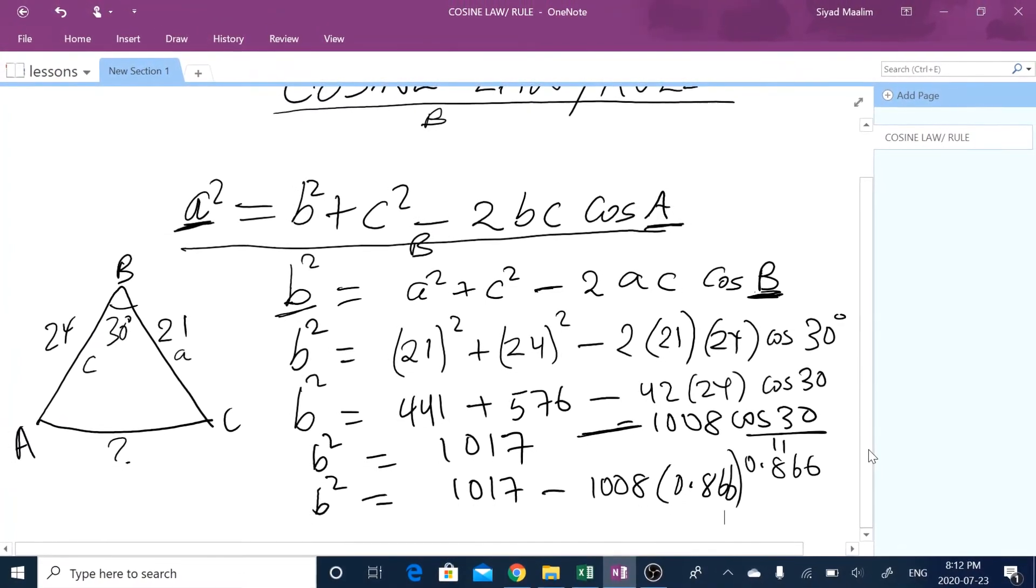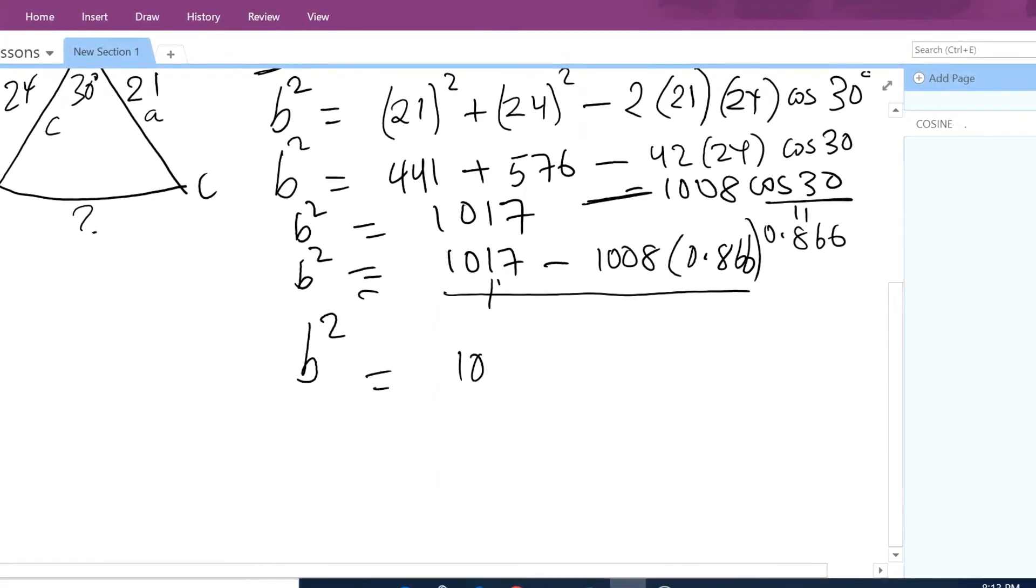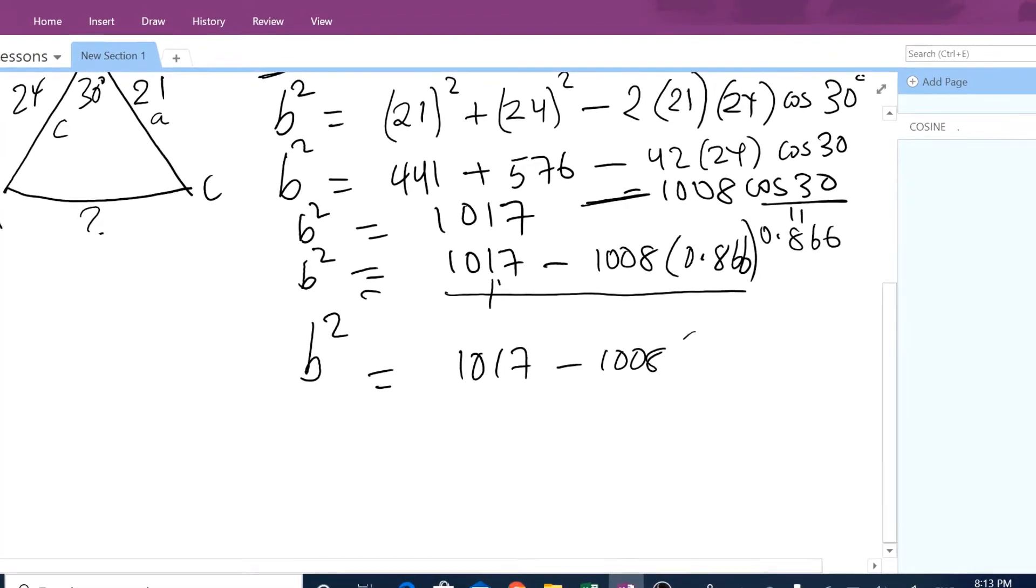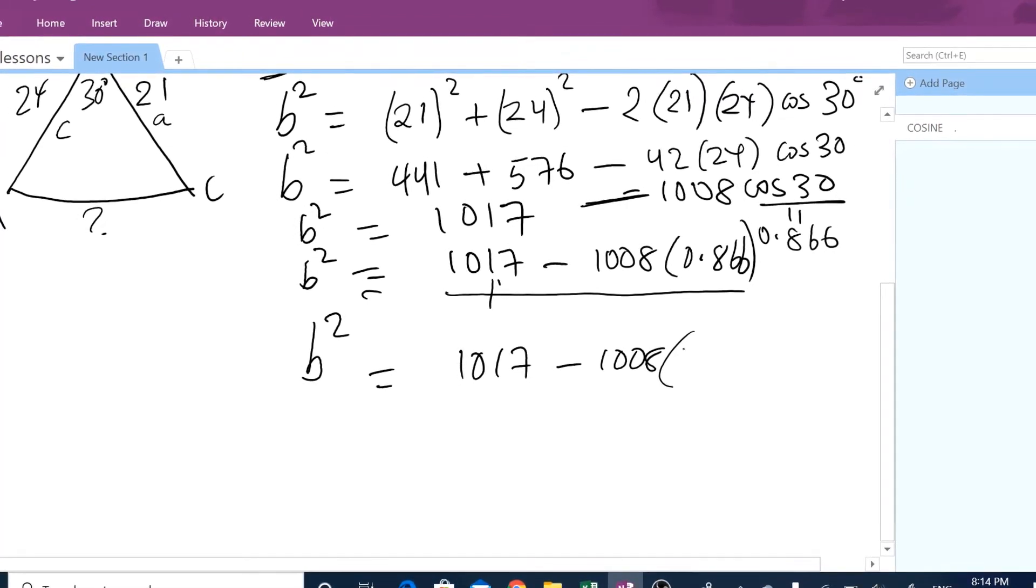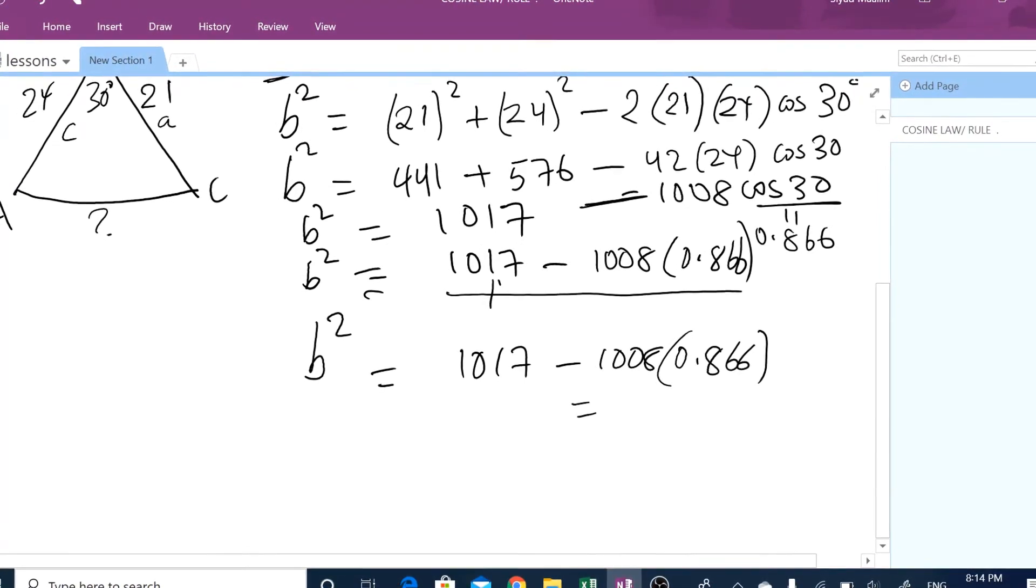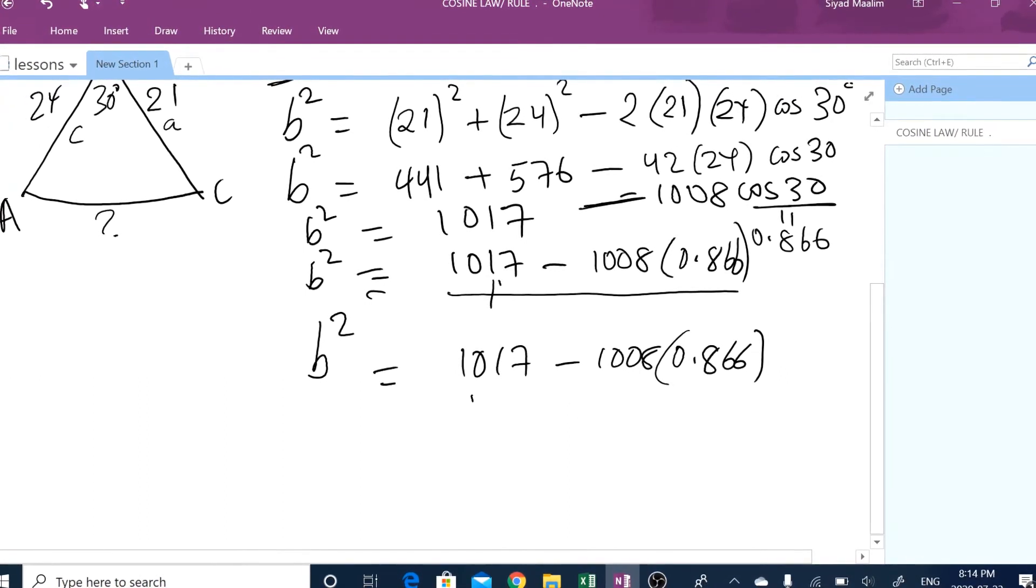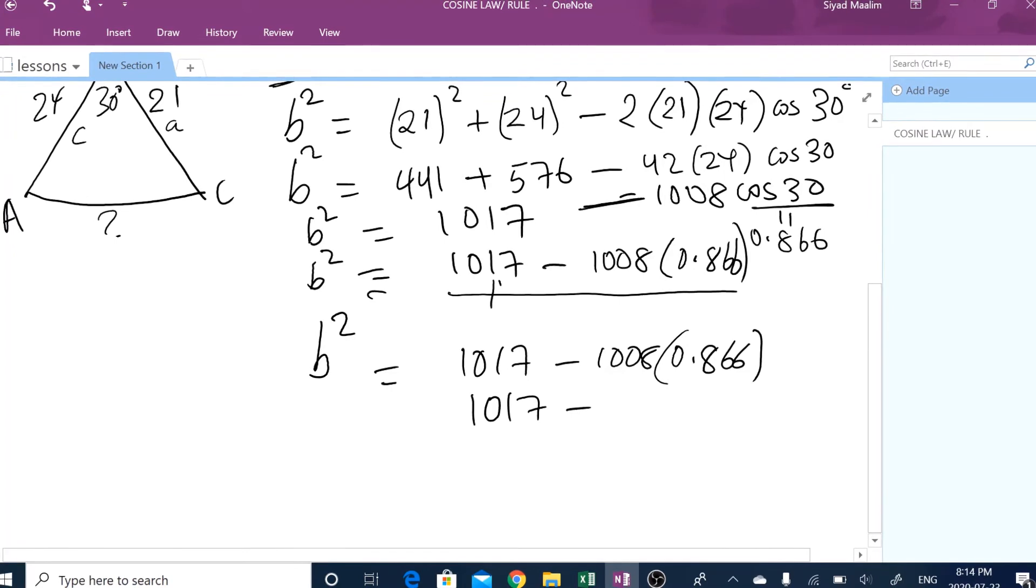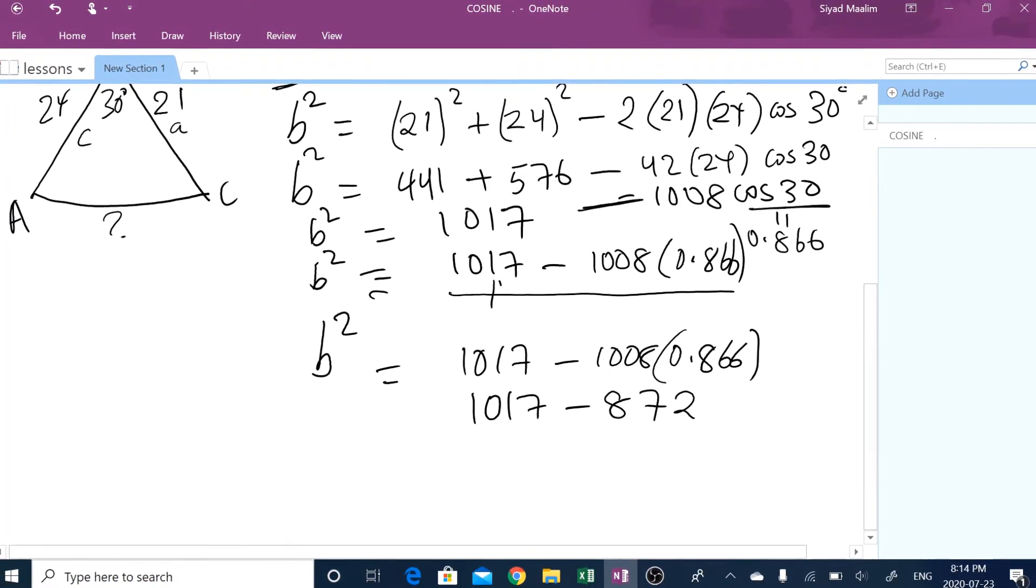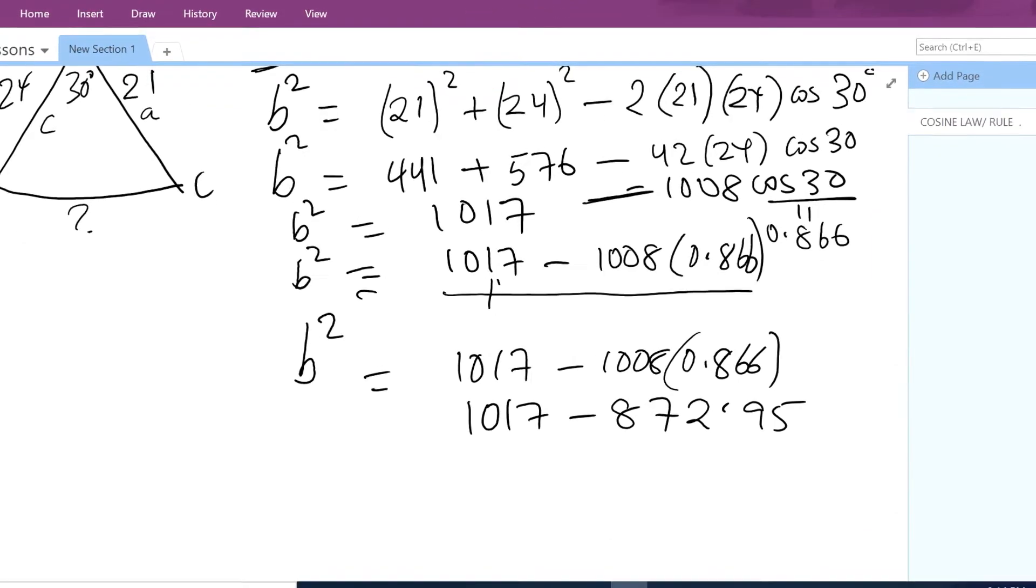So that will give me b squared equals 1017 minus 1008 multiplied by 0.866. So when you multiply this, 1017 minus 872.95. Let me do that.